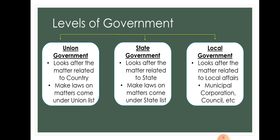As you know, students, the levels of government have been categorized into three parts. First is the Union Government, which looks after matters related to the country and makes laws under the Union List. Second is the State Government, which looks after matters related to the state and makes laws under the State List. Third is the Local Government, which looks after local affairs — organizations at the local level include municipal corporations or councils.